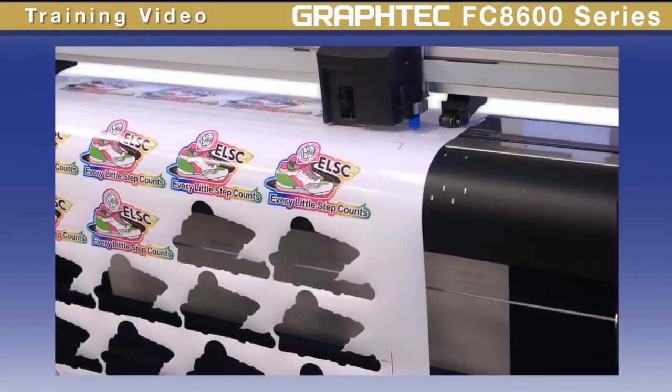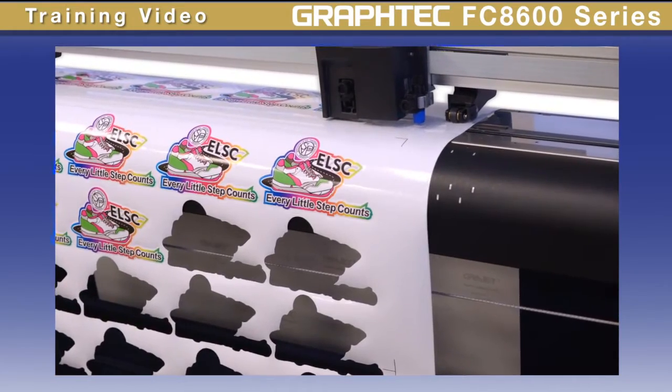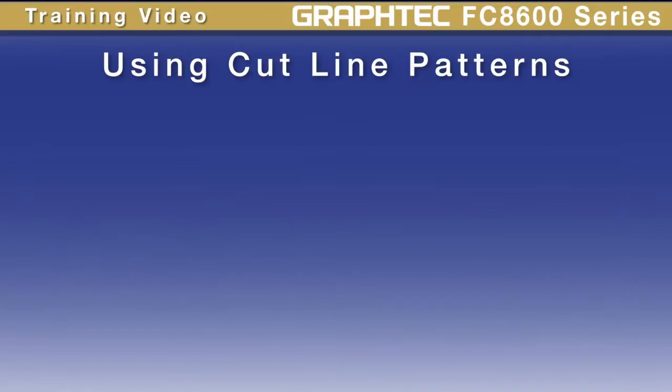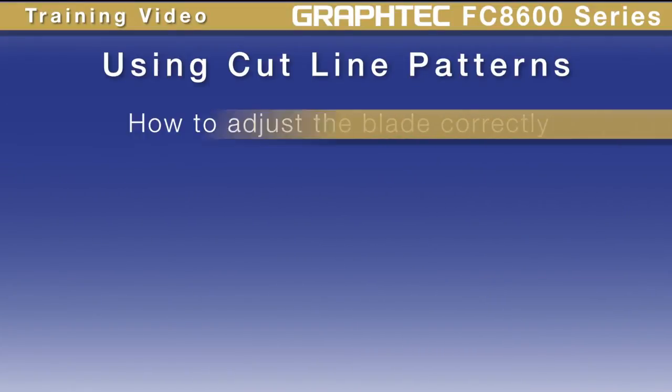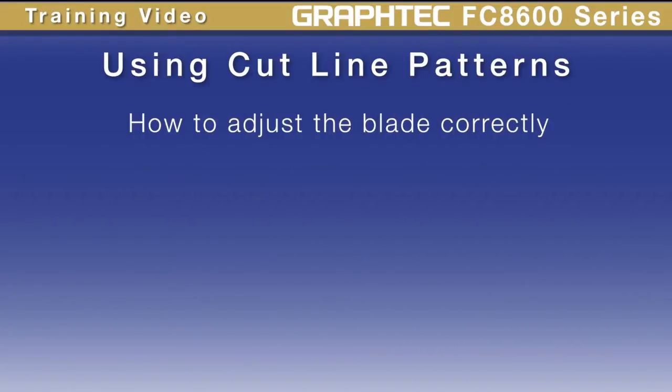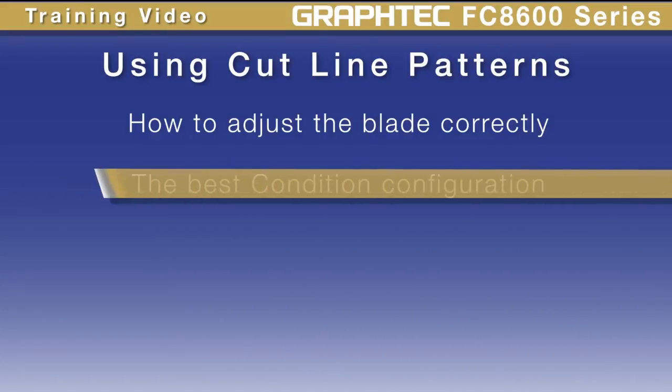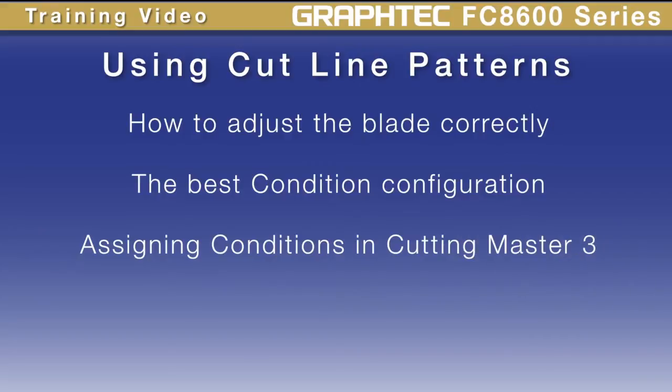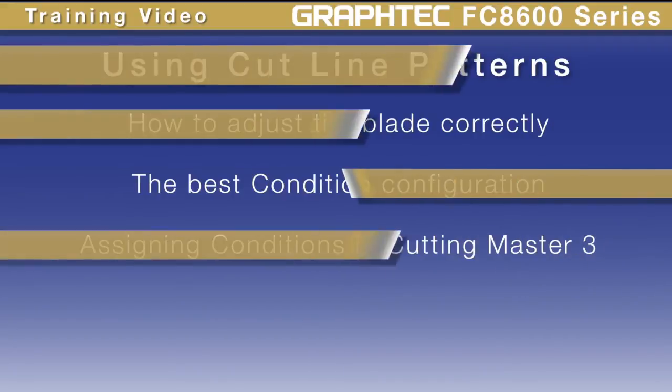This type of cutting is often used with a print and cut workflow to create pop-out decals. In this lesson we will show how the blade can be set up correctly for this type of operation, the best condition settings to be used for the best results, and then how to assign those conditions using Cutting Master 3.